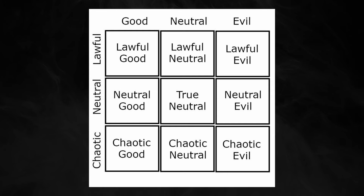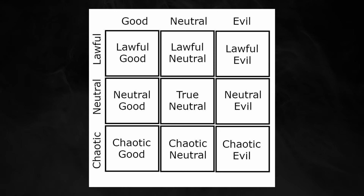Today's video is about the curious origins of the alignment system. What we see today in most modern editions of D&D is the 3x3 grid — the two-way axis that pits law and chaos on one side and good and evil on the other, with neutrality playing the middleman in both cases. But that is not how the alignment system started. It was, in fact, a one-way faceted system and not how you may intuitively expect.